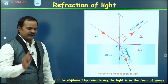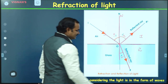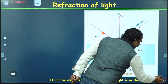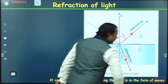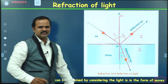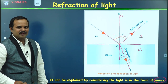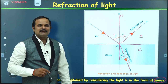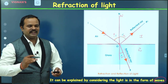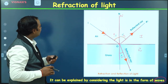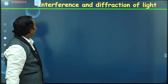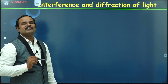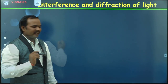This phenomenon of refraction can also be explained by considering light is in the form of waves. So here also, light is behaving like waves. Now let us consider some other important properties of light — those are interference and diffraction.